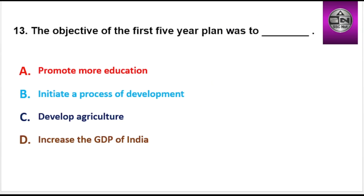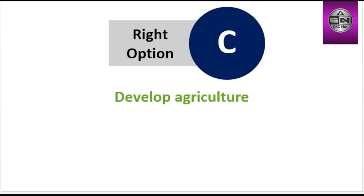Next question: The objective of the first five-year plan was to — Options are promote more education, initiate a process of development, develop agriculture, increase the GDP of India. Right option is C: Develop agriculture.